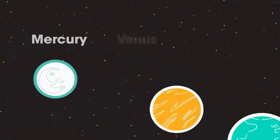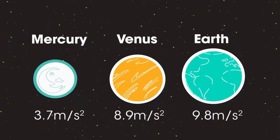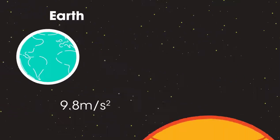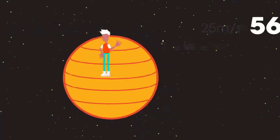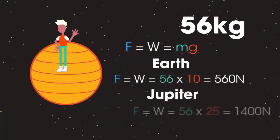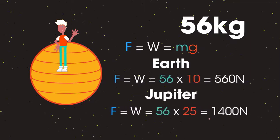See how gravitational field strength changes on the surface of different planets. This is because the planets have different sizes and masses. The largest planet, Jupiter, with the greatest mass, has the highest gravitational field strength. My weight on Jupiter, if there was a solid surface to stand on, would be 1,400 newtons.